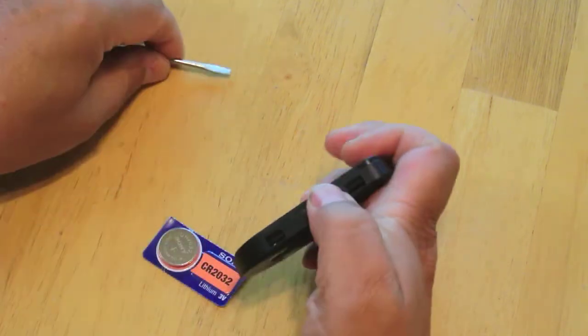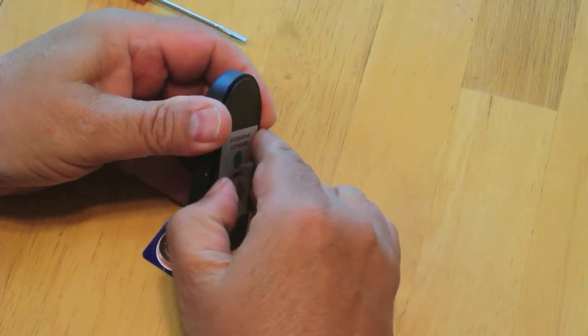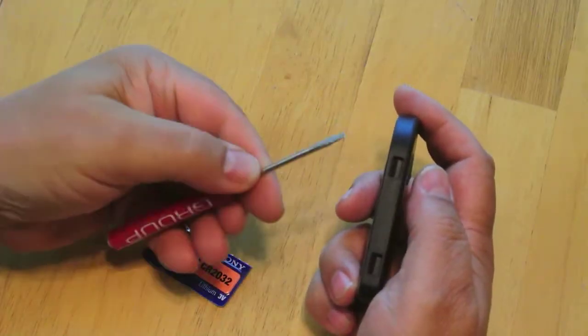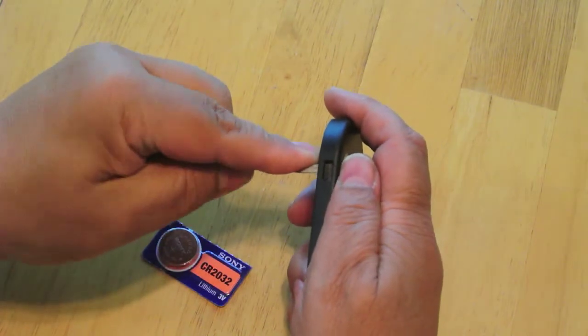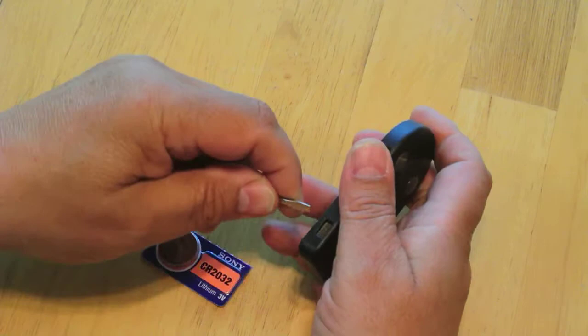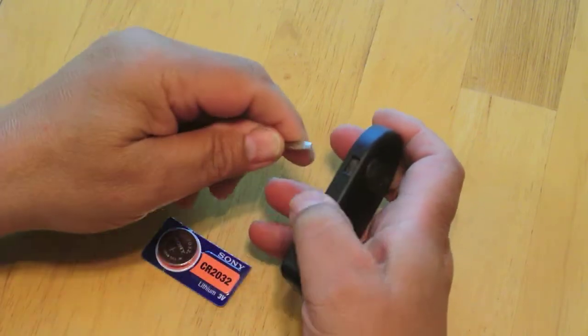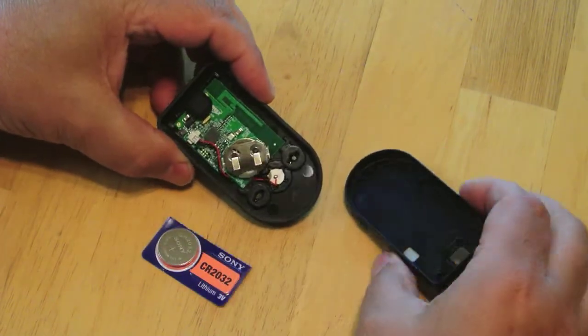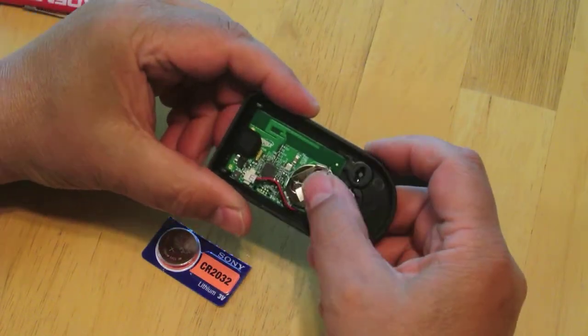you can disconnect it. You have to do it on both sides and just use a small screwdriver just to kind of pry it, and don't force it too much. You can end up deforming the plastic. There we go.